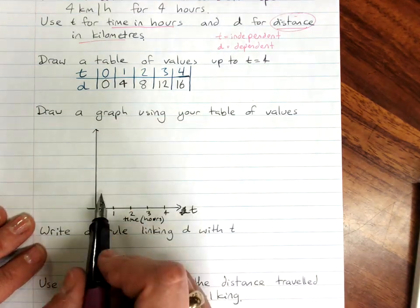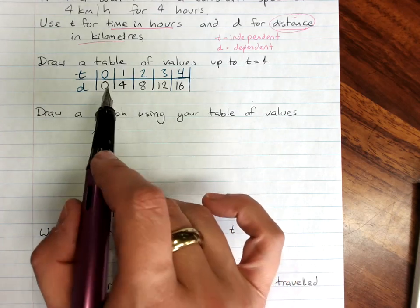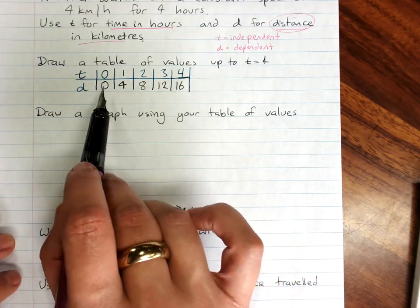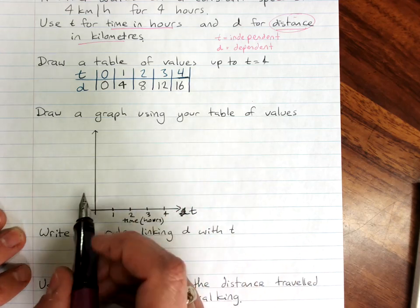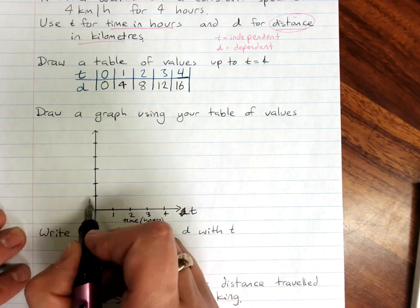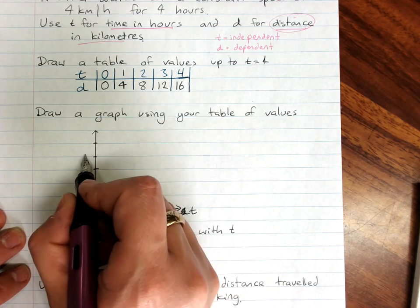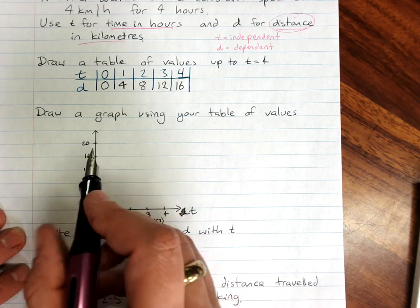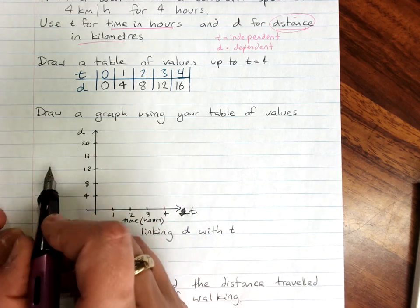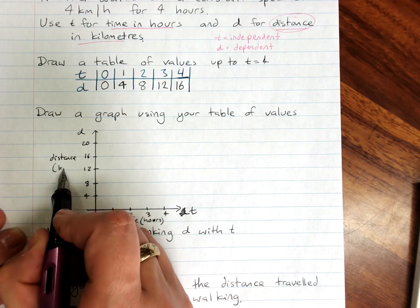Our X scale should be 1 because we're just going up by 1s on the X. And because I know that my distance, this is time, is going up in hours, I can say time in hours. Now the Y axis, find a nice easy value to go up by. These do all go up by 4. And going up by 4 is just fine. 4, 8, 12, 16, 20. And this is distance. And I'm going to label that distance in kilometers.